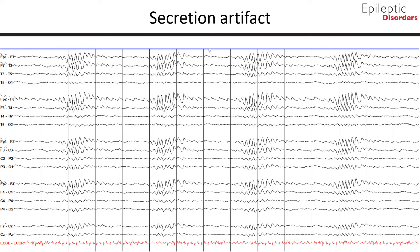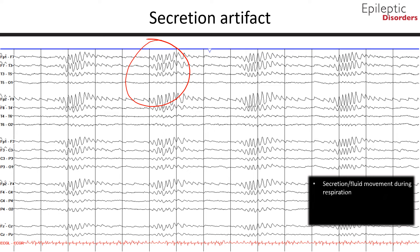Secretion artifact occurs as a result of secretions and fluid movement in the upper respiratory tract. From this bipolar montage, you can see the extremely regular periodicity of this activity, which would fit with respiratory rate or ventilatory settings — in this case, 4 per 15 seconds, equating to a respiratory rate of 16 per minute.